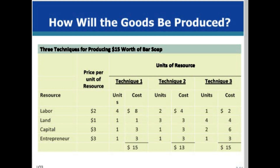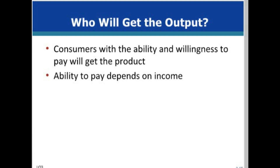Total revenue minus total cost equals economic profit or loss. For example, $15 minus $13 equals $2 economic profit. A market system is based on the willingness to pay principle, which means if the consumer is willing and able to pay, the consumer gets the product. The ability to pay depends on income, which depends on the amount of resources the person has and the price those resources obtain in the market.